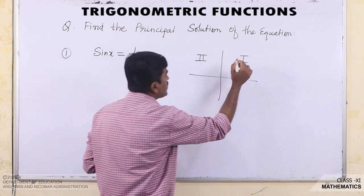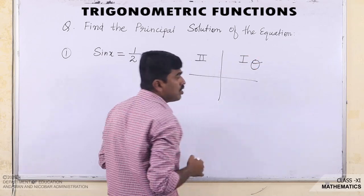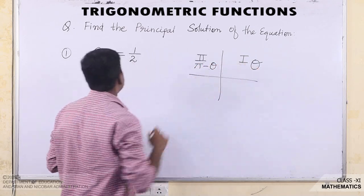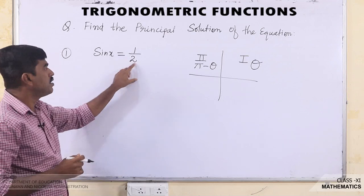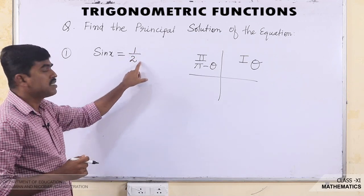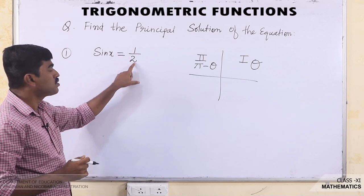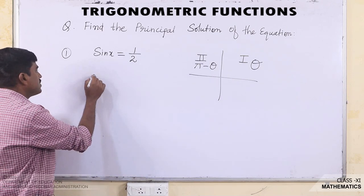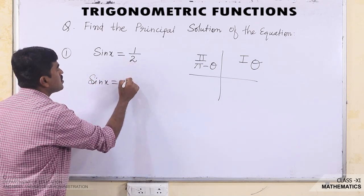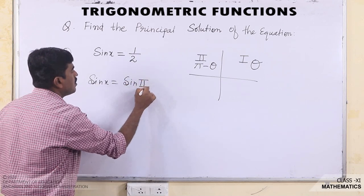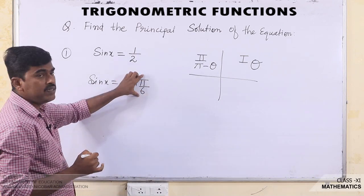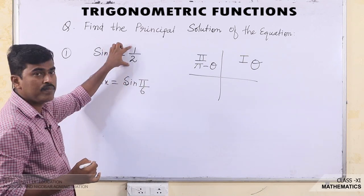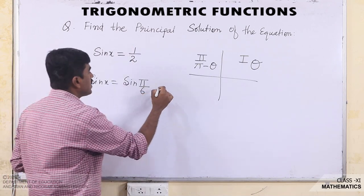In the first quadrant we take the angle theta as it is, and in the second quadrant we take the angle π − θ. For which angle is sin x = 1/2? We know sin x = 1/2 for x = π/6, that is 30°. So we can write this equation as sin x = sin(π/6).